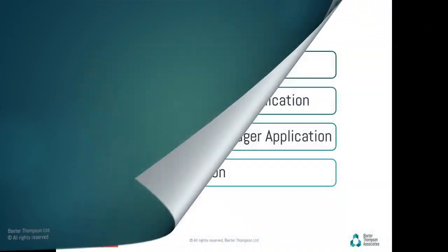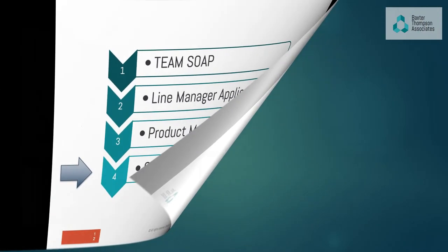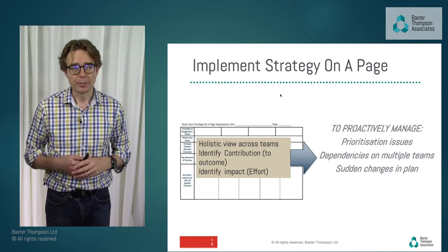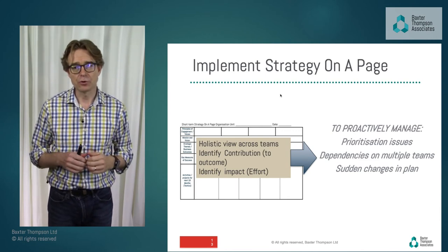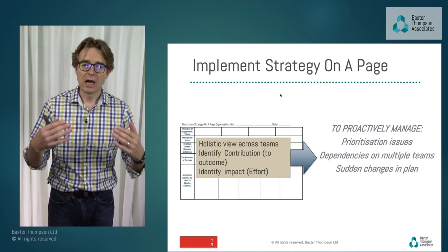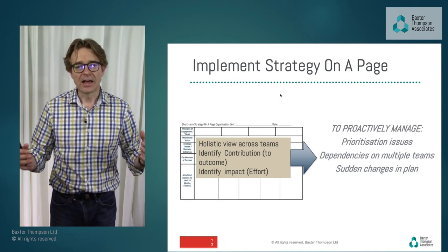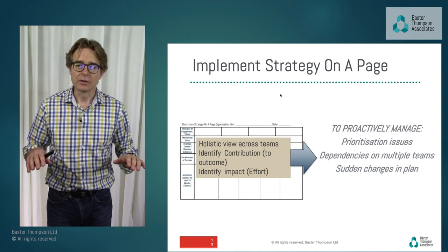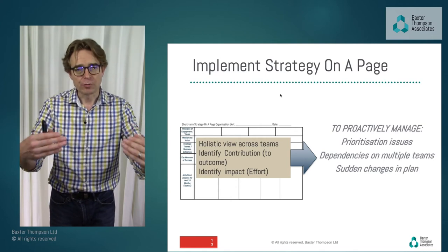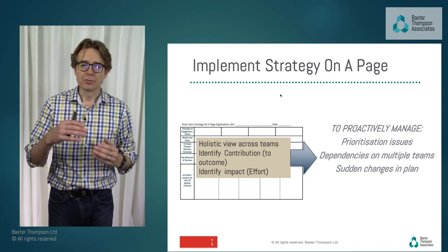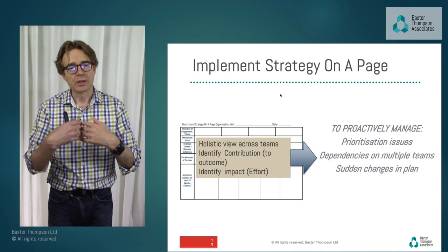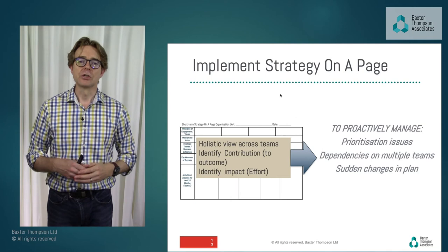In conclusion, my recommendation is to implement strategy on a page. If you have a holistic view across teams with a standard common language for expressing alignment, outcomes, and activities that people can see clearly — and how interdependencies between different department strategies align towards organisational goals — then it's much easier to prioritise sudden changes when someone comes in from the outside and says, I want to do this now.